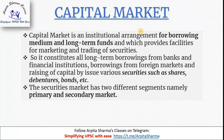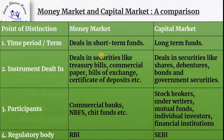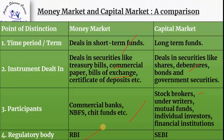The capital market is an institutional arrangement for borrowing medium and long-term funds, providing facilities for marketing and trading of securities. It refers to any institutional arrangement through which long-term funds — whether debt or equity — are raised and invested. The key difference between money market and capital market: money market deals in short-term funds (instruments like treasury bills, commercial paper, bills of exchange, CDs), while capital market deals in long-term securities like shares, debentures, bonds, and government securities. Regulatory bodies: RBI regulates the money market and SEBI regulates the capital market.